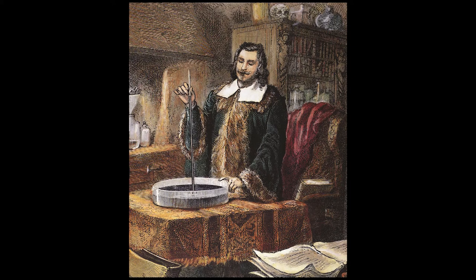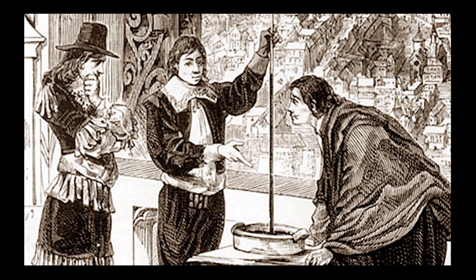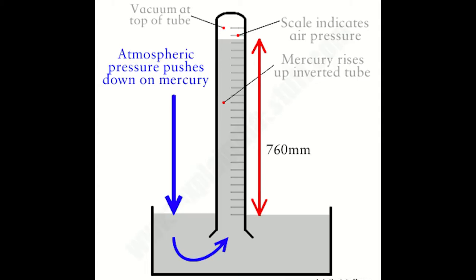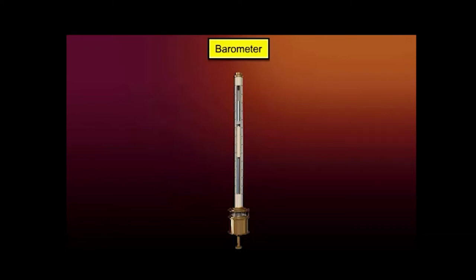A mercury barometer has a glass tube that is closed at the top and open at the bottom. At the bottom of the tube is a pool of mercury, sitting in a circular, shallow dish surrounding the tube. The mercury in the tube will adjust itself to match the atmospheric pressure above the dish. As pressure increases, it forces the mercury up the tube. The tube is marked with a series of measurements that track the number of atmospheres or bars, and observers can tell what the pressure is by looking at where the mercury stops.